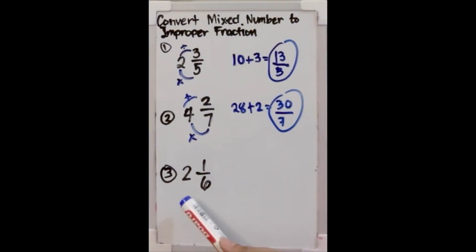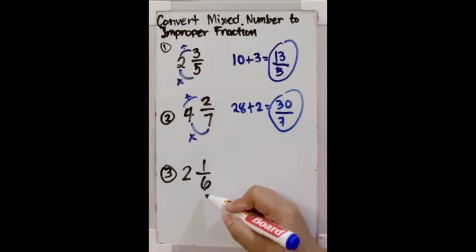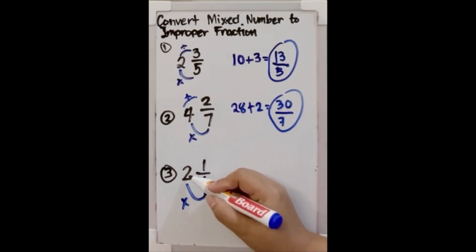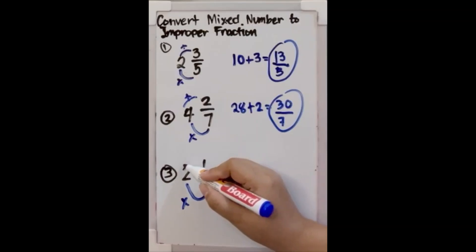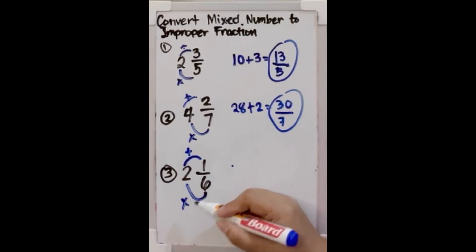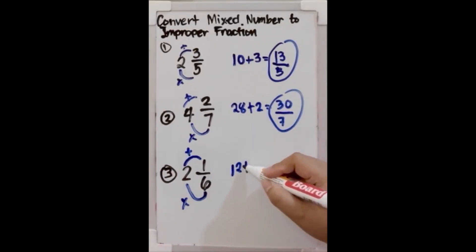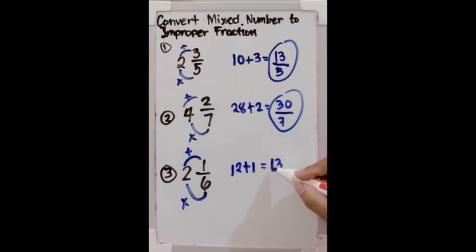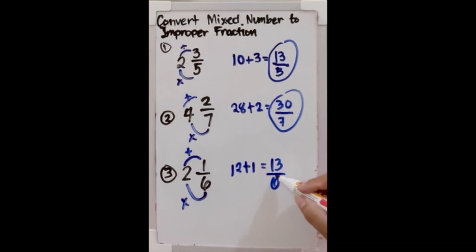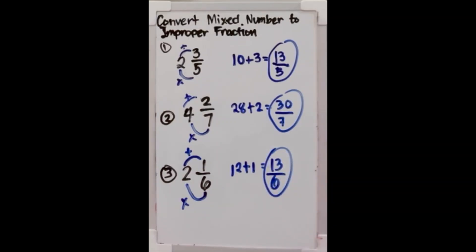The last example is 2 and 1 over 6. We multiply the denominator by the whole number: 6 times 2 is 12. Then 12 plus the numerator 1 gives us 13. Just copy the denominator 6. So 2 and 1 over 6 is equal to 13 over 6.